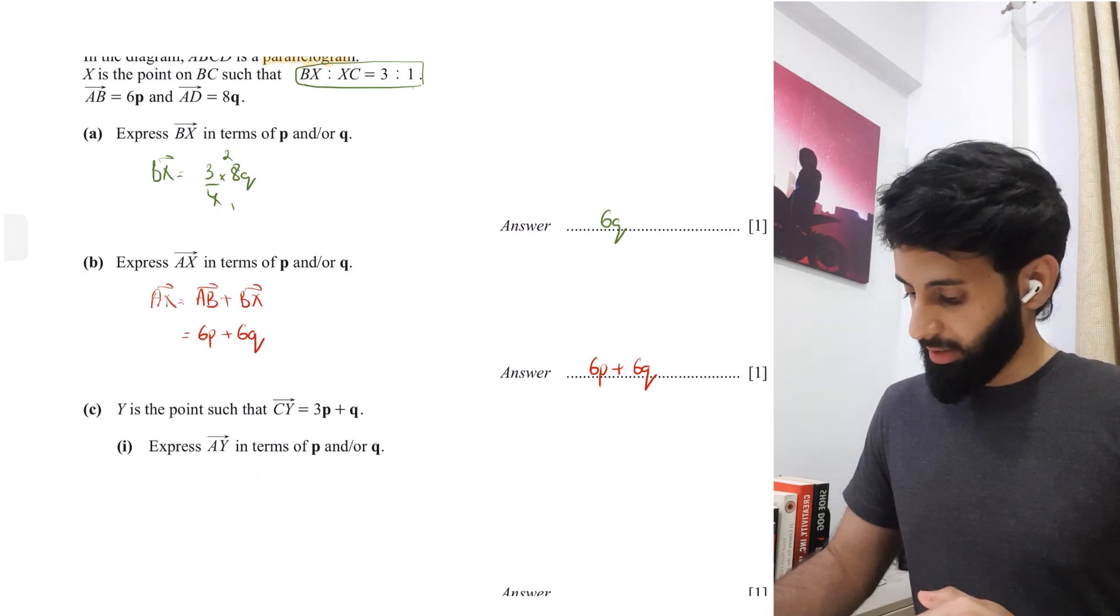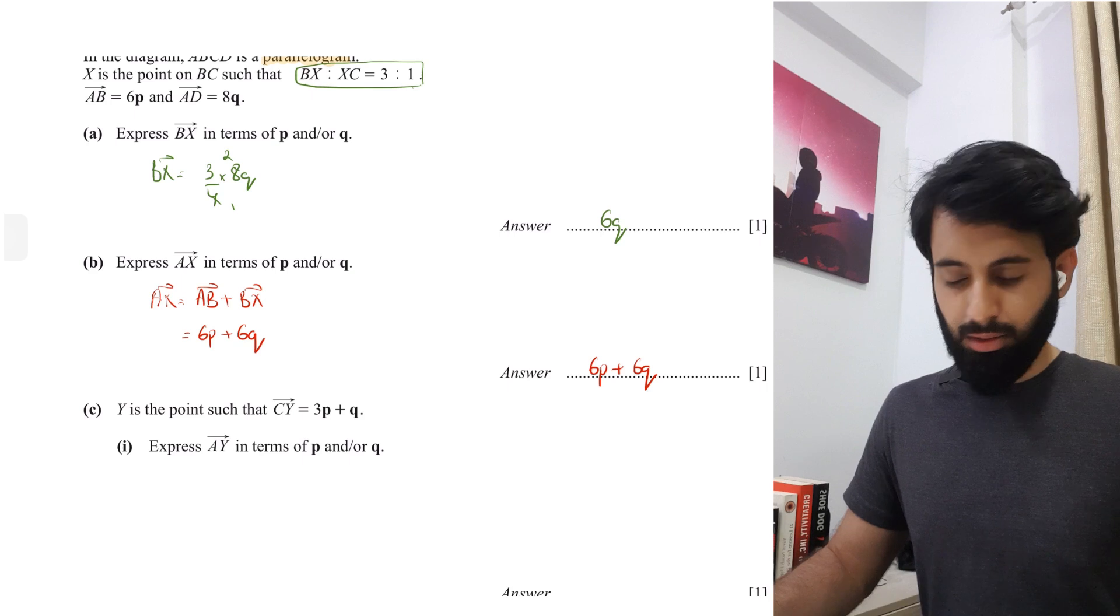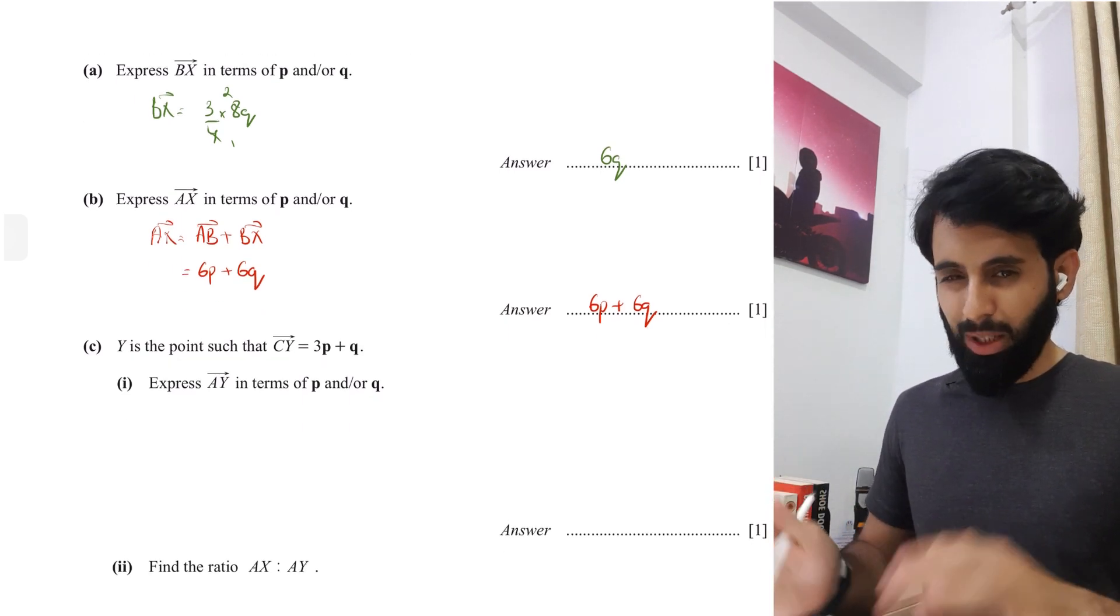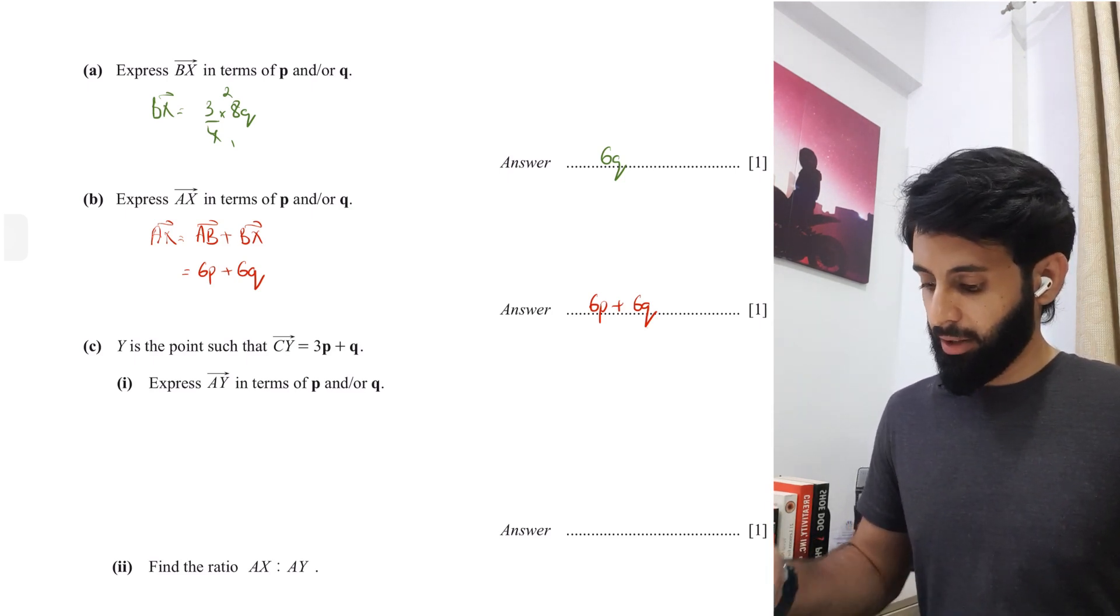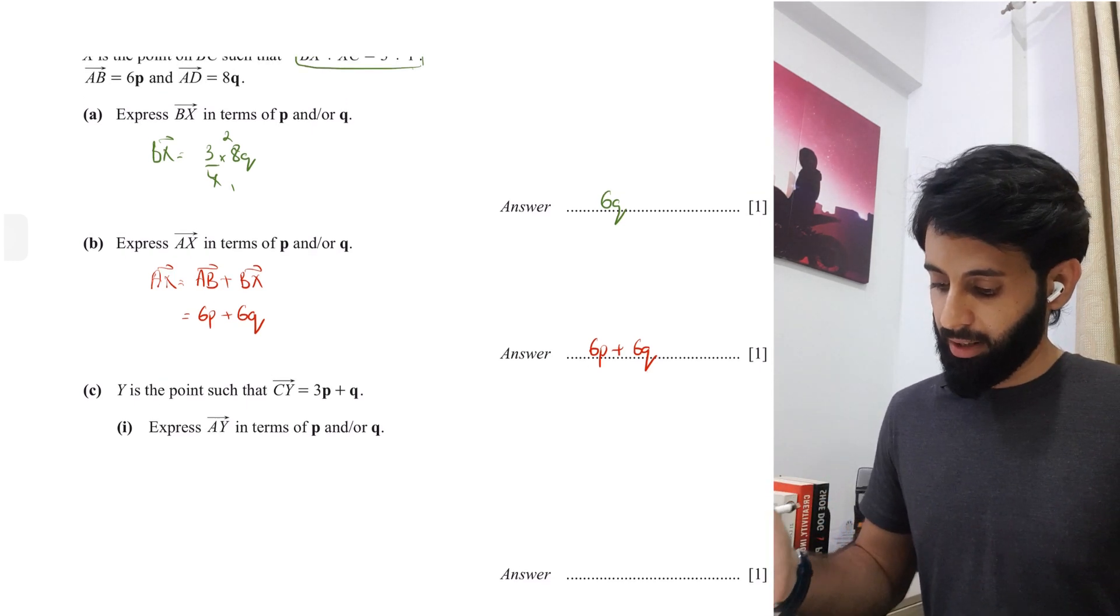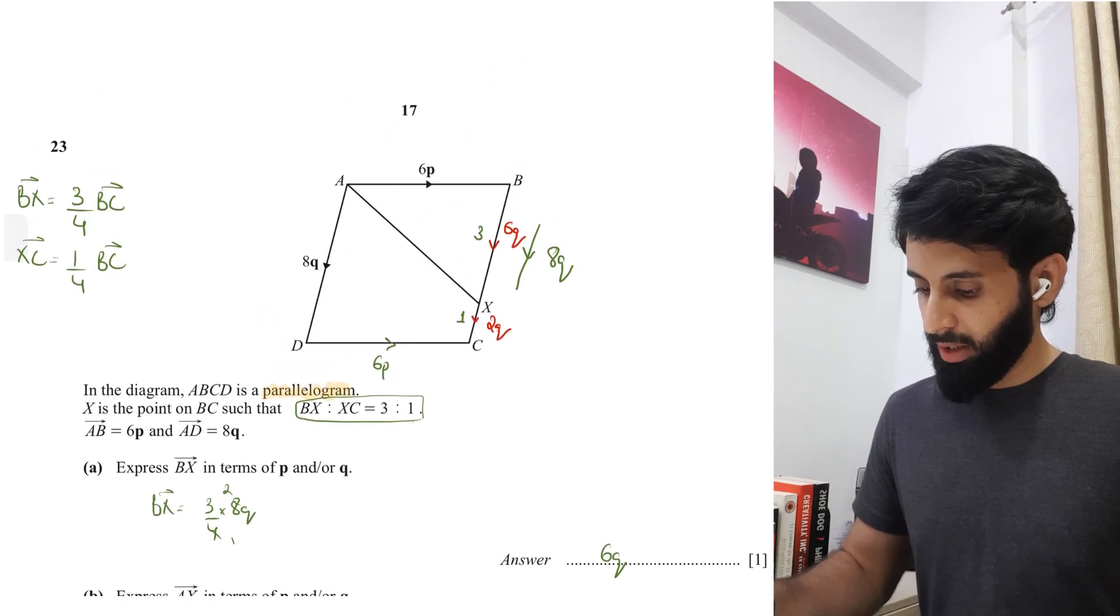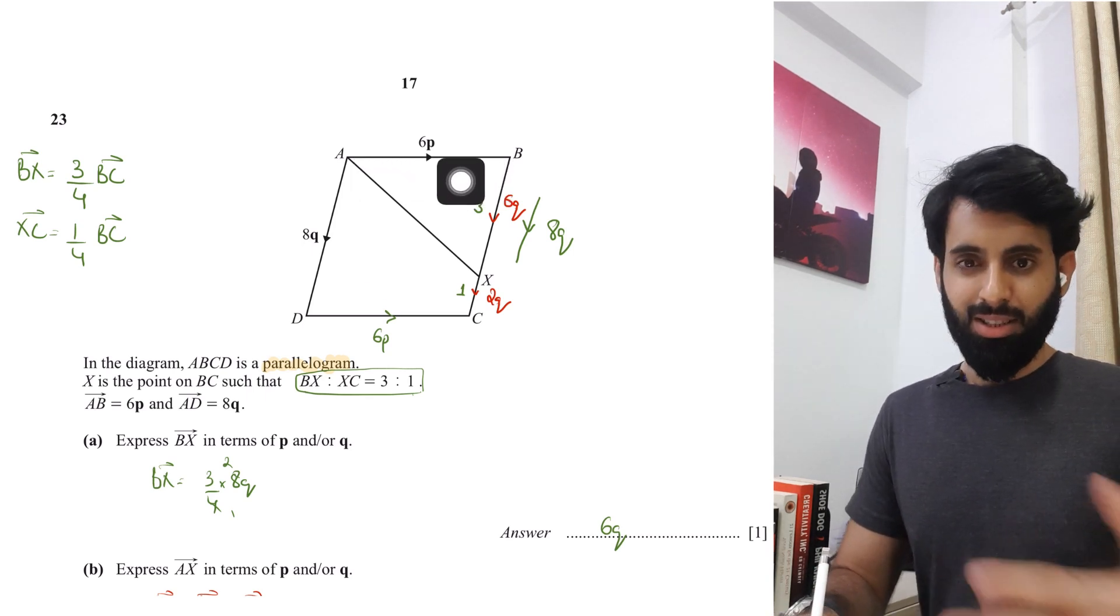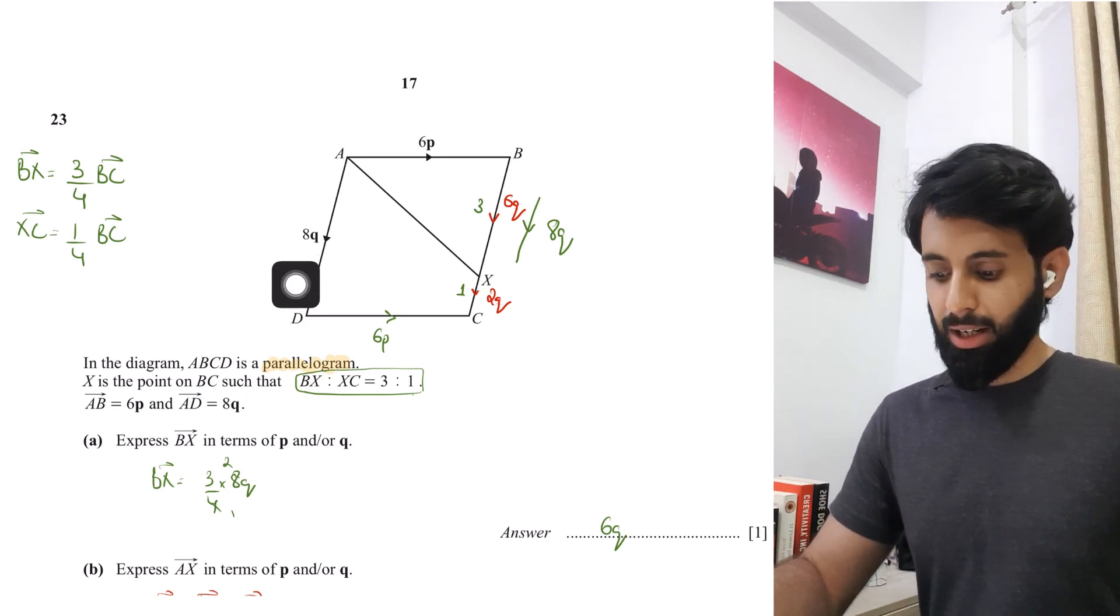It says Y is the point on CY such that CY equals 3P plus Q. Express AY in terms of P and or Q. While we can express this very easily, I want you to develop the understanding of where point Y is located. CY basically means 3P plus Q. P is a vector in this direction—AB is 6 times of it. Q is a vector in this direction, and AD is 8 times of it.